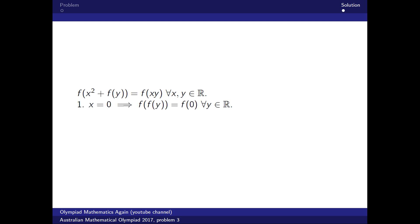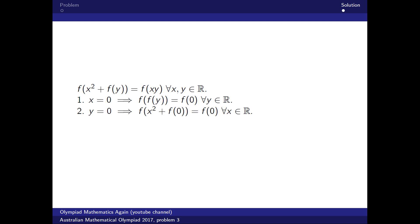First, when we set x to zero, we obtain this condition: f is equal to f for any y. And when we set y to zero, we obtain this condition: f of x squared plus f of zero is equal to f of zero for any x.